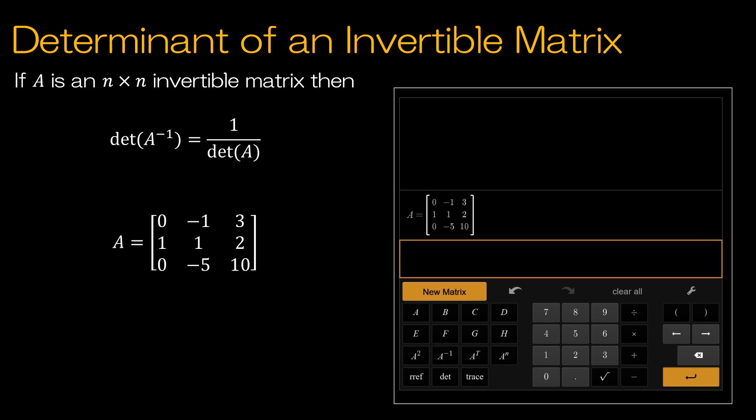Our next property has to do with the determinant of the inverse of a matrix. Essentially we're saying if you find the determinant of the inverse of a matrix, it's equal to the multiplicative inverse of the original matrix. So let's take a look at the determinant of A, negative 5, as we knew. And so the inverse of that would be 1 divided by negative 5, which is negative 1 fifth, or negative 0.2.